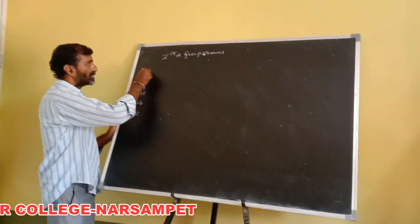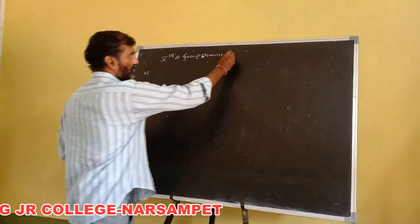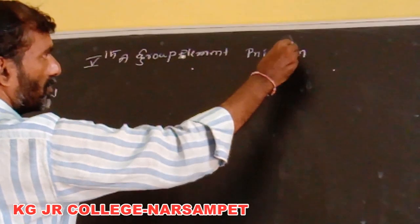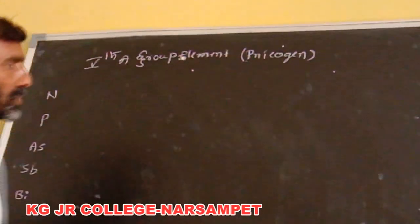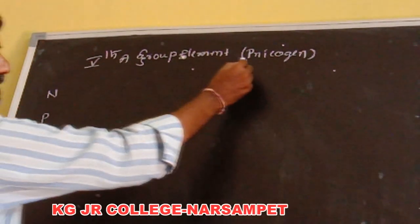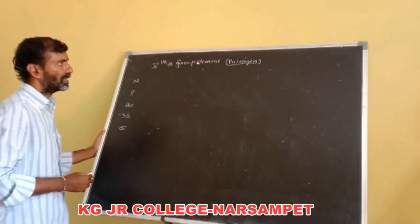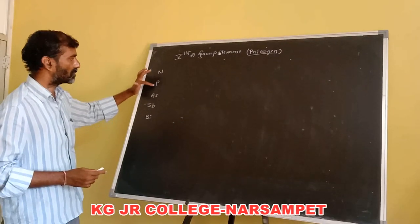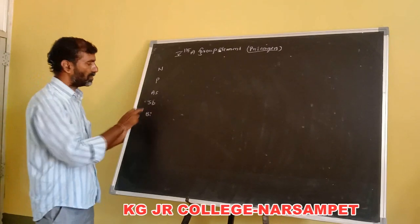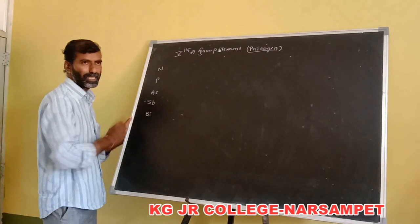Fifth group elements are called pnictogens. Pnictogens means 'to choke.' The elements are nitrogen, phosphorus, arsenic, antimony, bismuth. The Latin name of antimony is stibium.